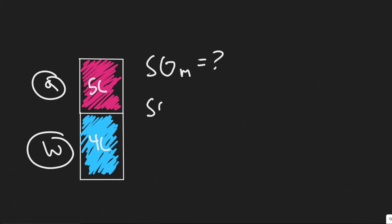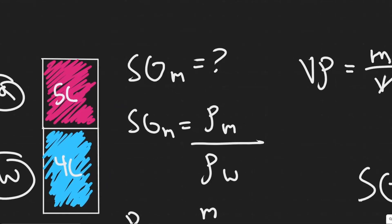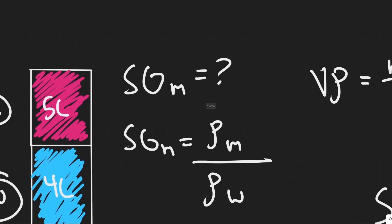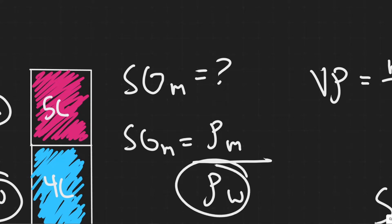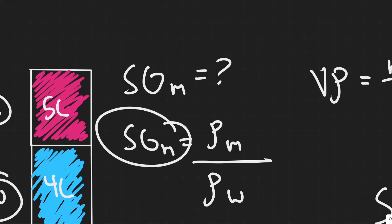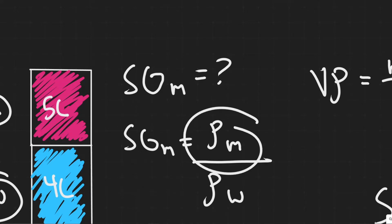You need to know what specific gravity is. Essentially, specific gravity is the ratio between the density of the substance and the density of water. So it's the density of whatever your substance is divided by the density of water. In this case, we're finding the specific gravity of the mixture, so we divide the density of the mixture by the density of water.